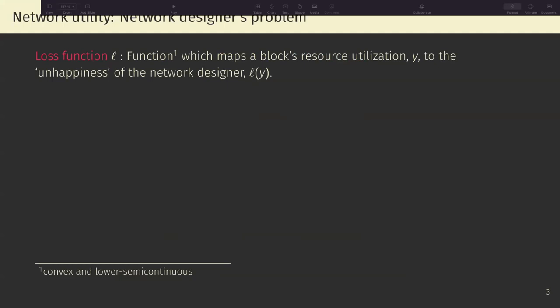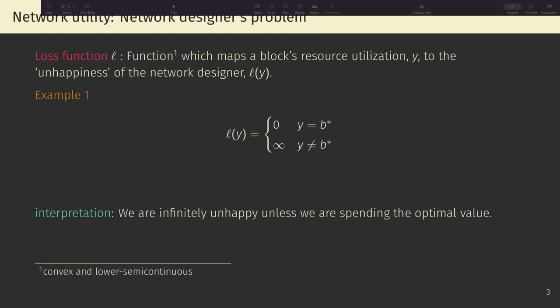Okay, so let's start defining network utility. We define the loss function L as a function which maps resource utilization Y to the unhappiness of the network designer L of Y. There are many different types of loss functions. So, as a first example, we have L of Y being equal to zero if Y equals B, if we're spending exactly the target, and infinity otherwise, which can be interpreted as we're infinitely unhappy unless we're spending the optimal value.